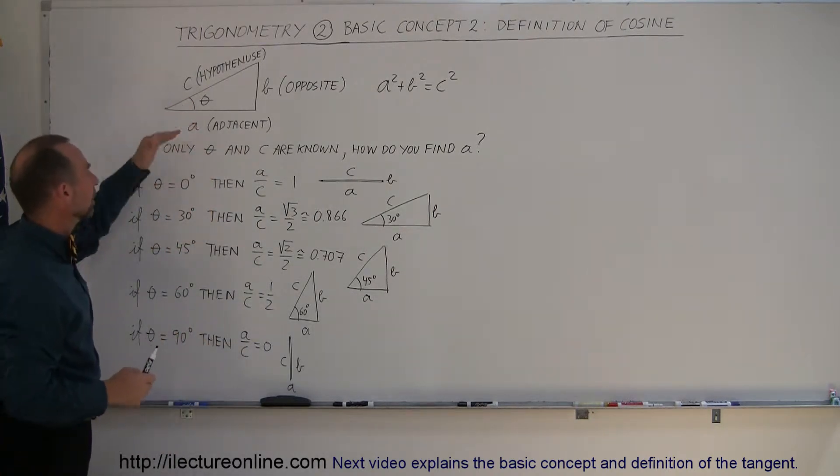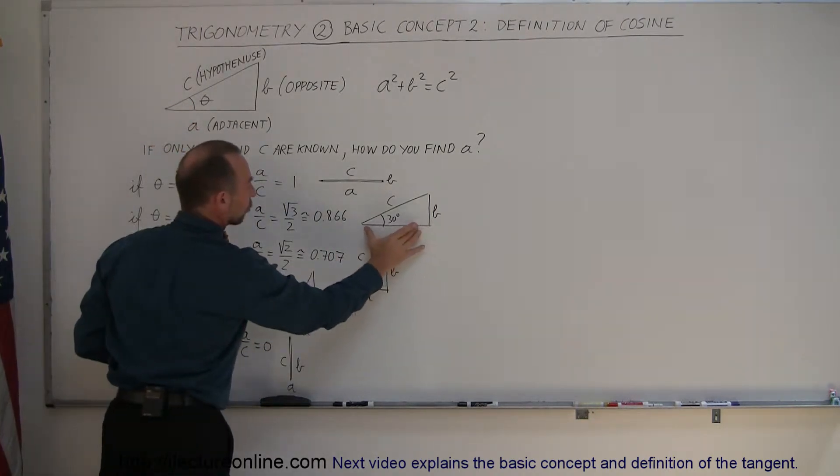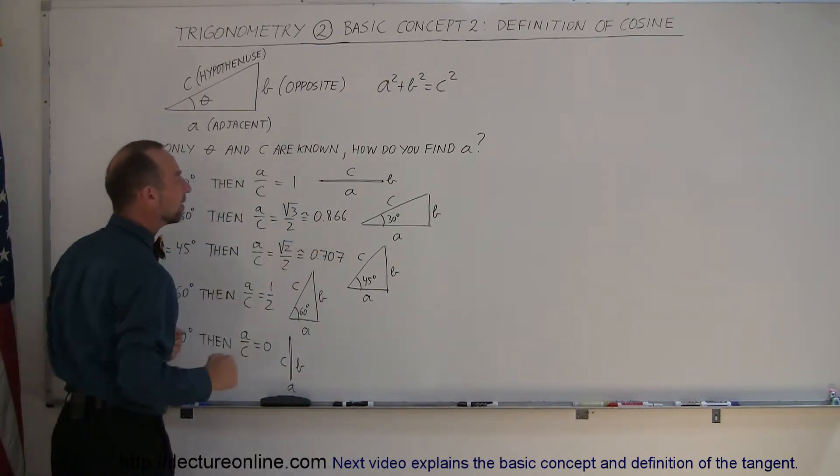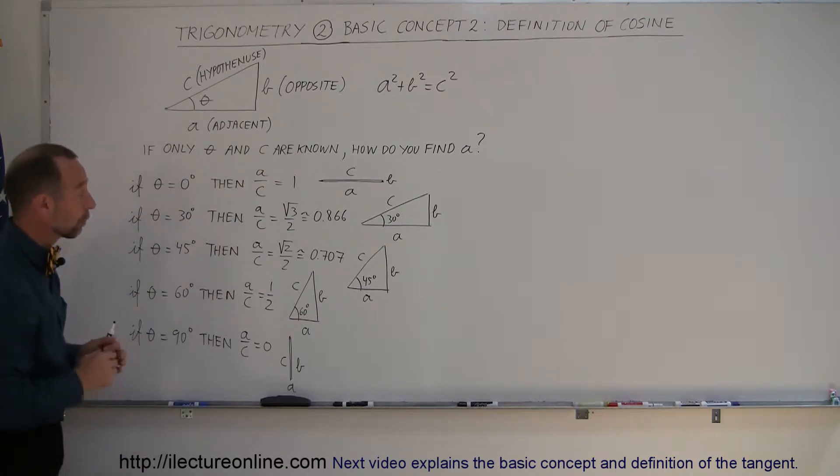But if the angle is 30 degrees, then you can see that the adjacent side is a little bit shorter, and so now the ratio of the adjacent side to the hypotenuse is a little bit less than 1, 0.866, or the square root of 3 over 2.